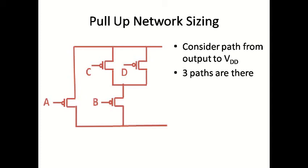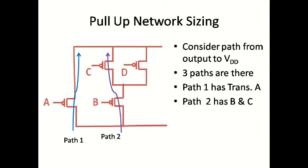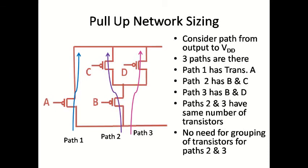For the pull-up network, three paths are available. Path 1 has only one transistor with input A. Path 2 has two transistors with inputs B and C. Path 3 has two transistors with inputs B and D. Paths 2 and 3 share common transistor B, with transistors C and D respectively in their paths. Both paths have the same number of transistors, so grouping is not required.